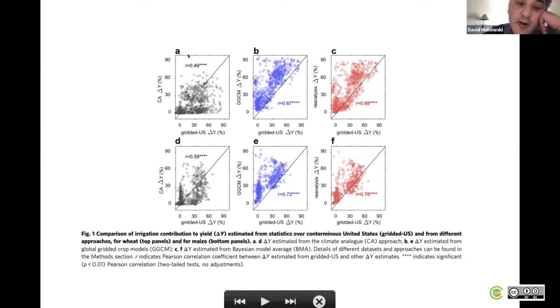The climate analogue has a poor correlation with observations of yield gap in the United States. You have two series of three graphics because you have two crops, maize and wheat. For both crops, the correlation between observation and prediction of climate analogue are relatively poor, around 0.5. But there is no bias, so this approach is unbiased.